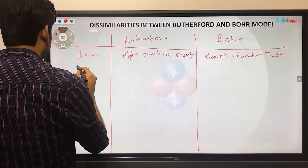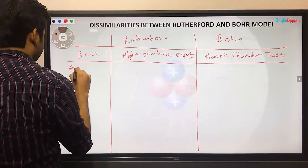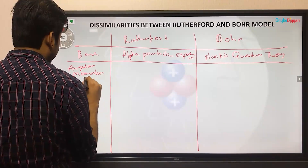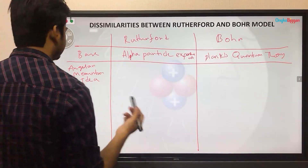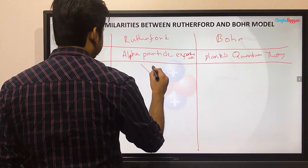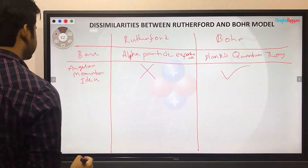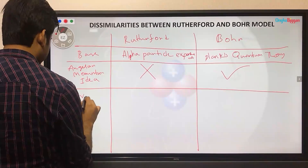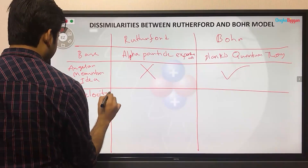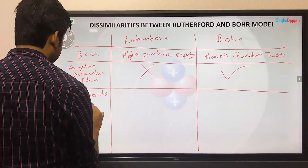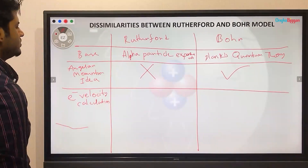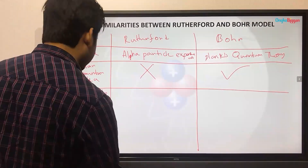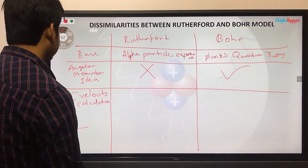Let's talk about the angular momentum-related idea. In this model, we have to calculate the angular momentum. We also have to calculate the electron velocity — we can calculate the electronic velocity using this Bohr model.